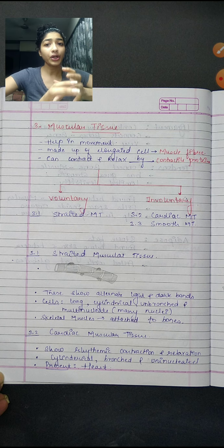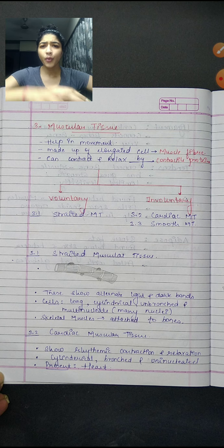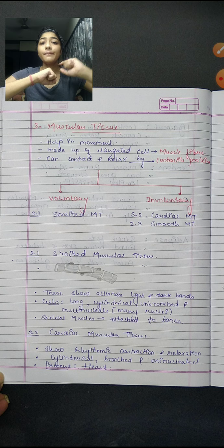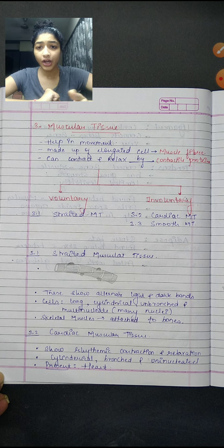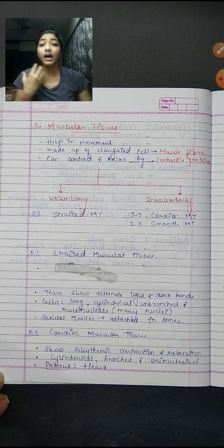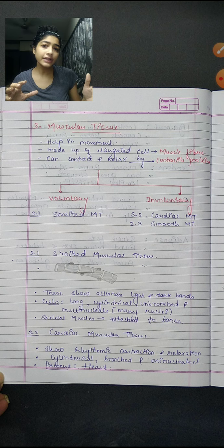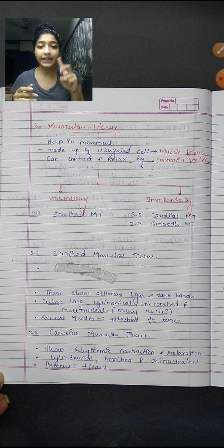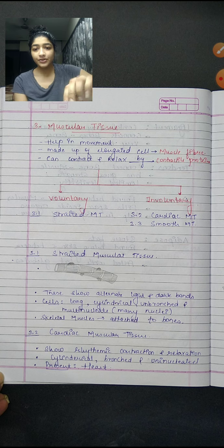Muscles are of two types: voluntary muscles and involuntary muscles. Voluntary muscles are those which are under our control — like our hands. Involuntary muscles are those not under our control — like the muscles of the esophagus and alimentary canal. The movement of food into the stomach and small intestine is not under our control, so those are involuntary muscles. Based on voluntary and involuntary, there are three types: striated muscular tissue, cardiac muscular tissue, and smooth muscular tissue.